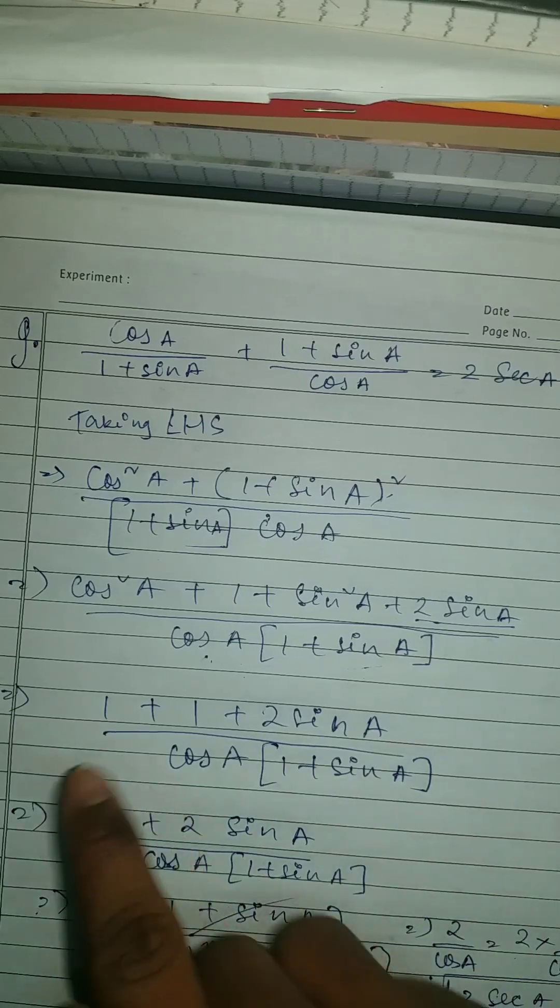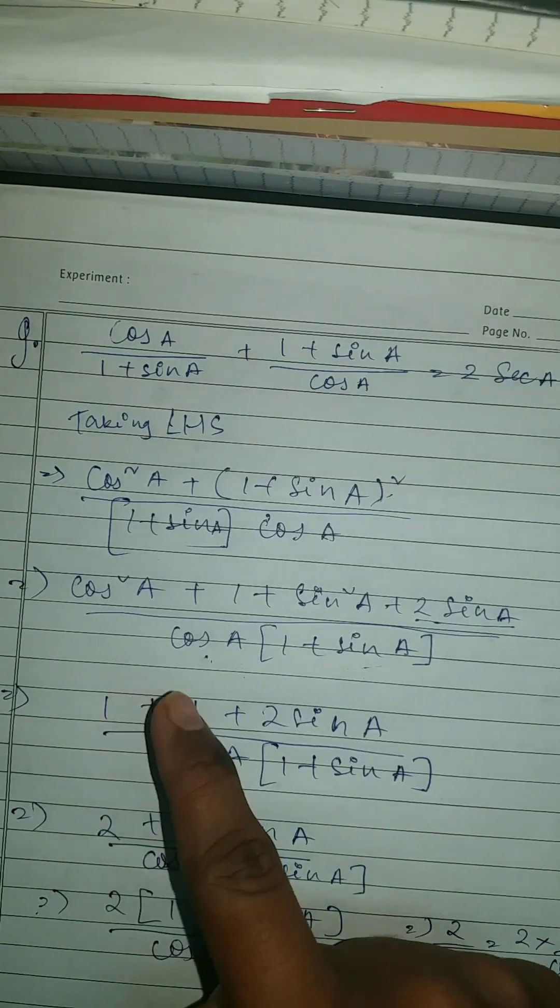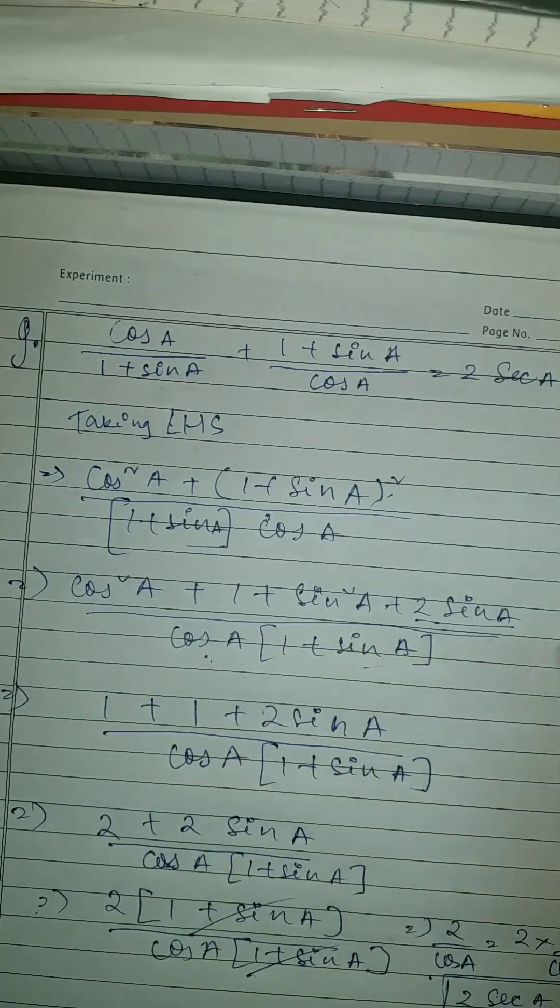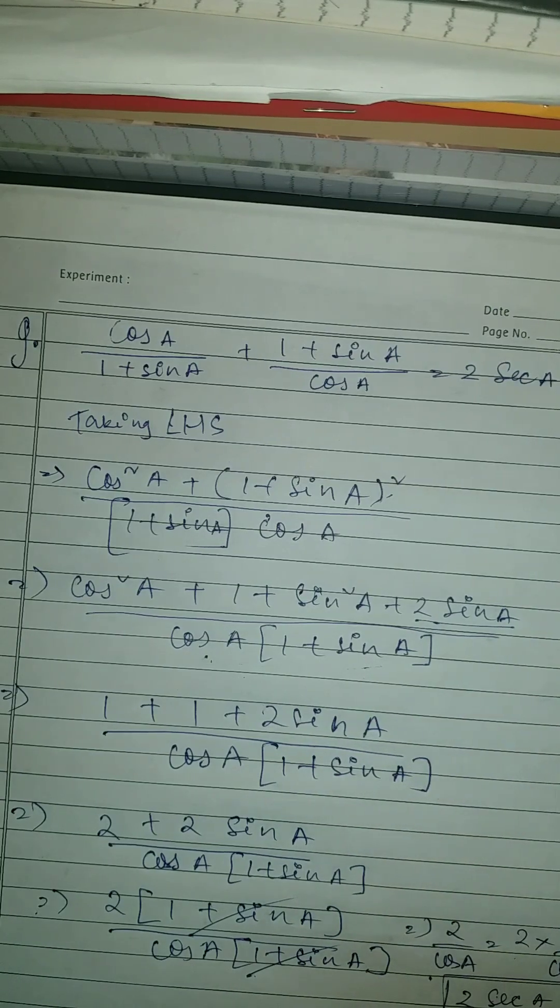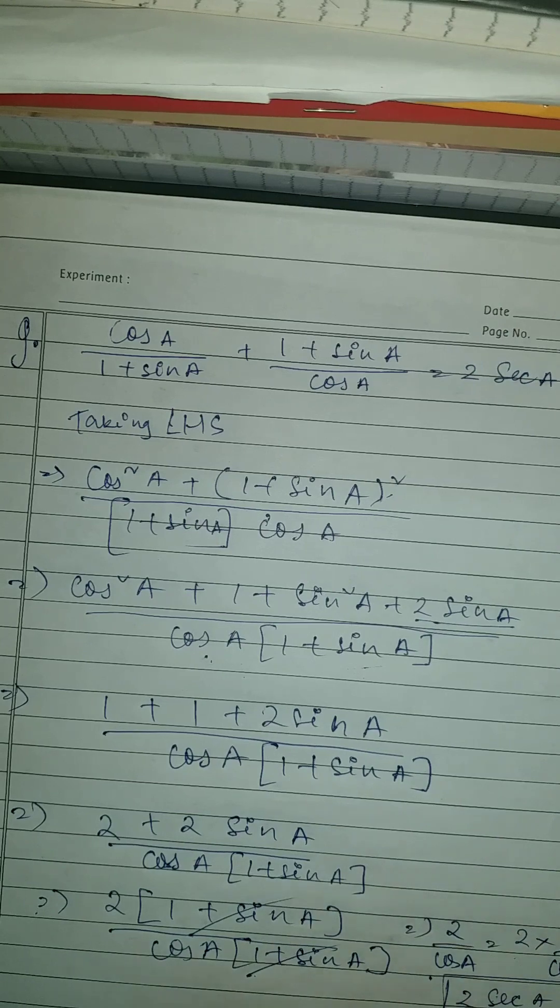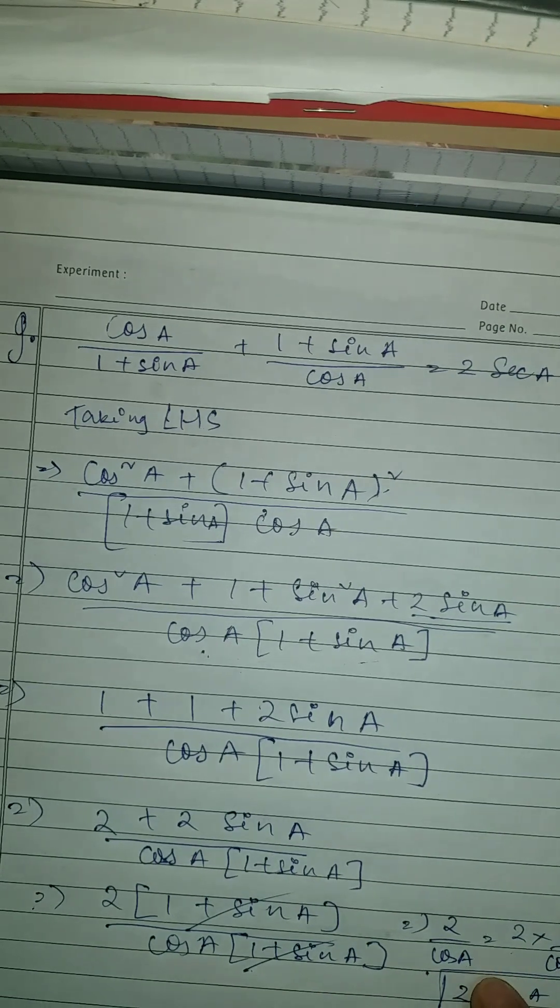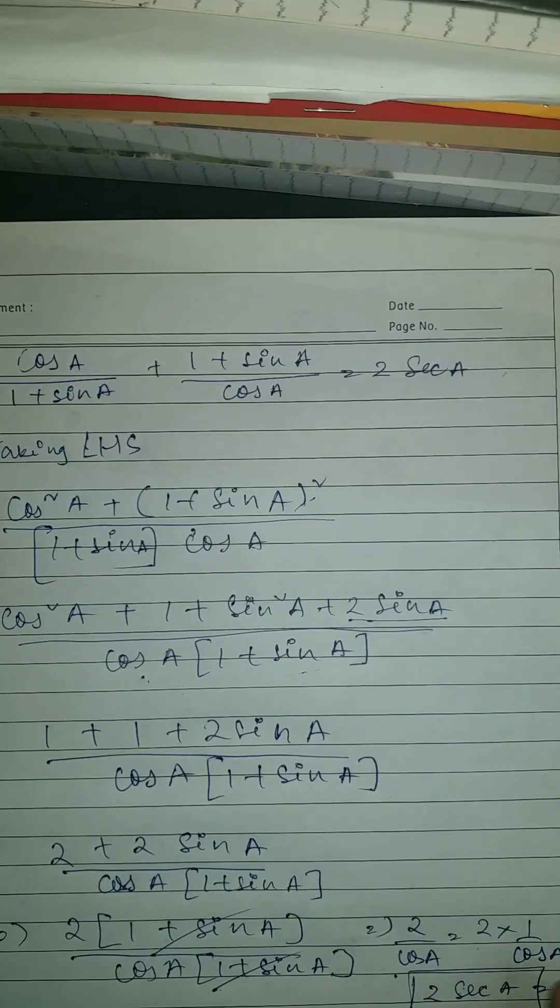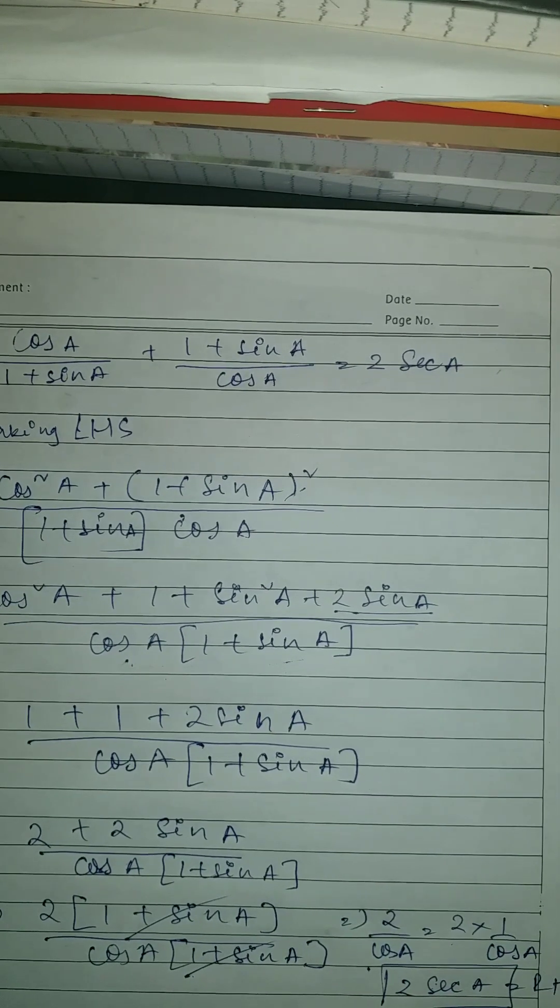Then you have to take common from here. Once you got common, you have to cancel them. And once you cancel them, you have to rewrite this cos a into 1 upon cos. So by doing this we can get the answer which is your 2 sec a, which is equal to RHS.